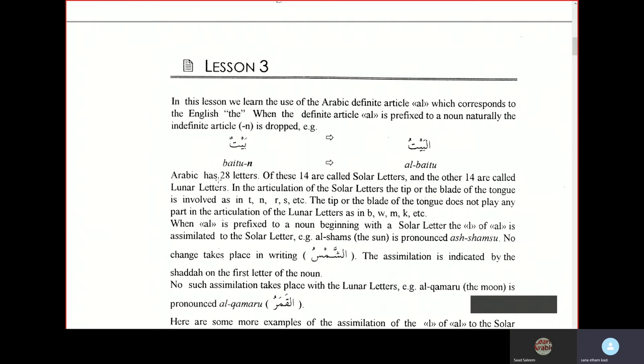No change takes place in writing, though. It is written as alif-lam-shin-mim-sin. It's written the same, but the pronunciation is different. The assimilation is indicated by the shadda on the first letter of the noun, so here is the shadda on shin.